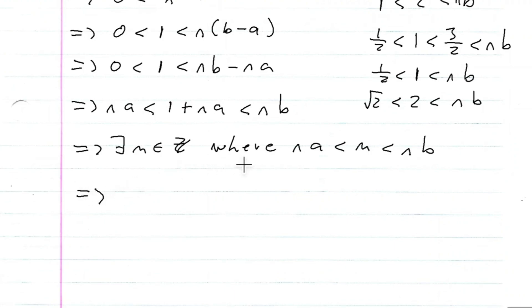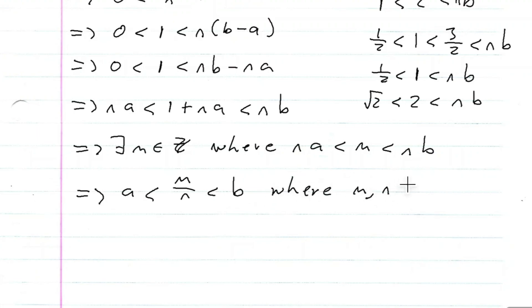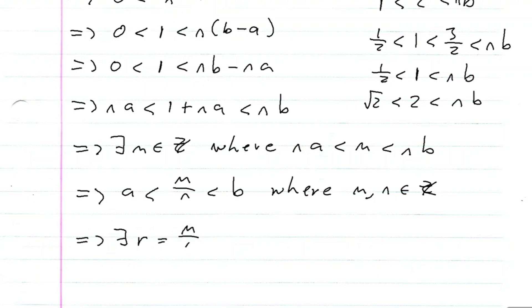If I divide this entire inequality by n — which I can because n is not zero — I get a < m/n < b, where m and n are integers. More specifically, n is a natural number, but m is an integer, and natural numbers are a subset of the integers. So this implies there exists an r = m/n contained in the rationals — since m/n is an integer over an integer — satisfying a < r < b, which is what I set out to do.